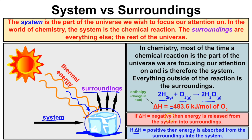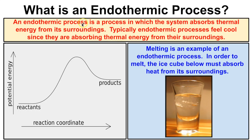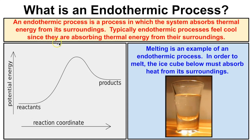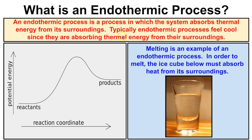Let's take a look at two different types of processes: endothermic versus exothermic, and apply those concepts to changes in state of matter. An endothermic process is a process in which the system absorbs thermal energy or heat from its surroundings, and typically endothermic processes feel cool since they are absorbing all the thermal energy from their surroundings.